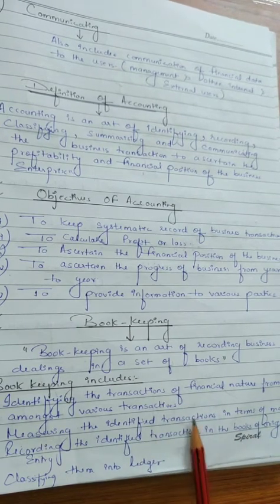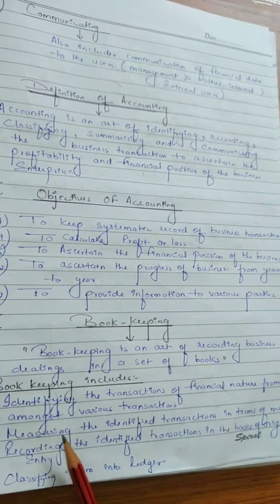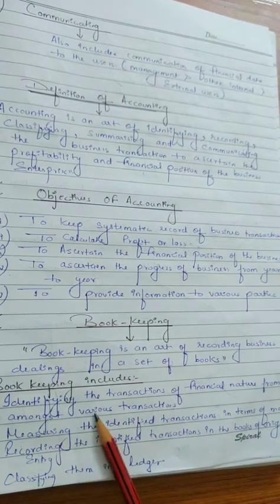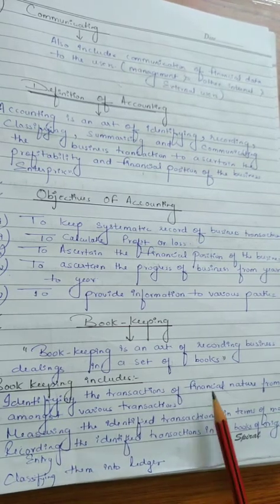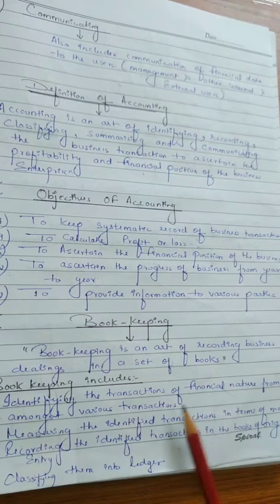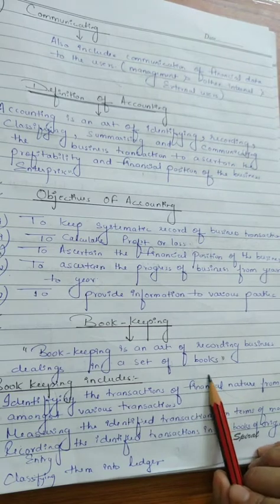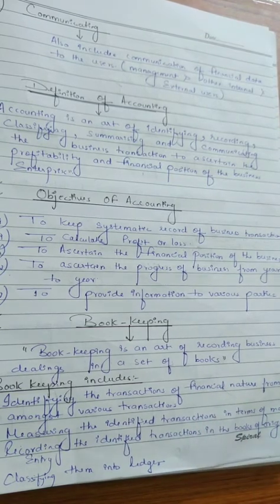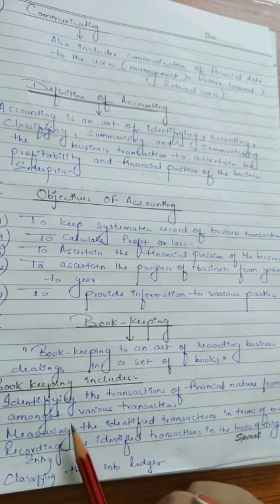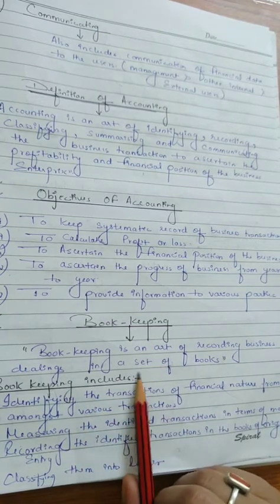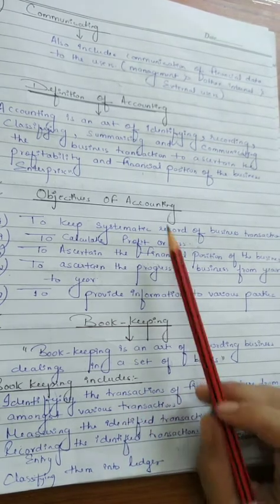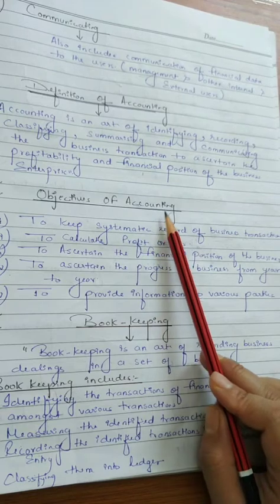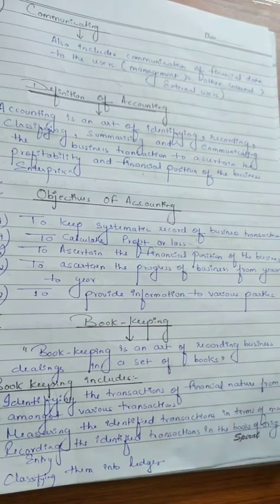There is a difference between bookkeeping and accounting. Bookkeeping includes identifying, measuring, recording, and classifying financial transactions, whereas accounting — in addition to bookkeeping — includes summarizing the classified transactions. Accounting starts where bookkeeping ends. Another difference is that the main objective of bookkeeping is to maintain a systematic record of financial transactions, whereas the main objective of accounting is to ascertain the net results and financial position of the business.